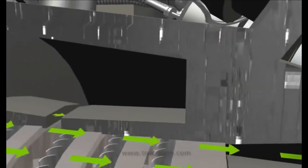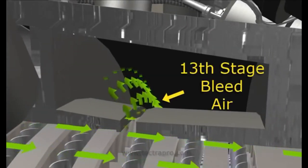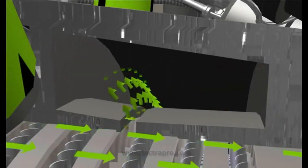The second stage of stationary vanes is cooled from bleed air coming in from the thirteenth stage of compressor bleed air.